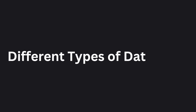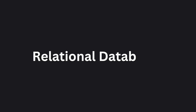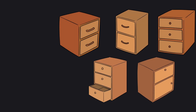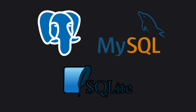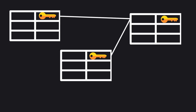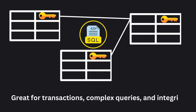We have different types of databases, each designed for specific tasks and challenges. The first type is relational databases. Think of a relational database like a well-organized filing cabinet where all the files are neatly sorted into different drawers and folders. Some popular examples of SQL databases are PostgreSQL, MySQL, and SQLite. All SQL databases use tables for data storage and use SQL as a query language. They are great for transactions, complex queries, and integrity.